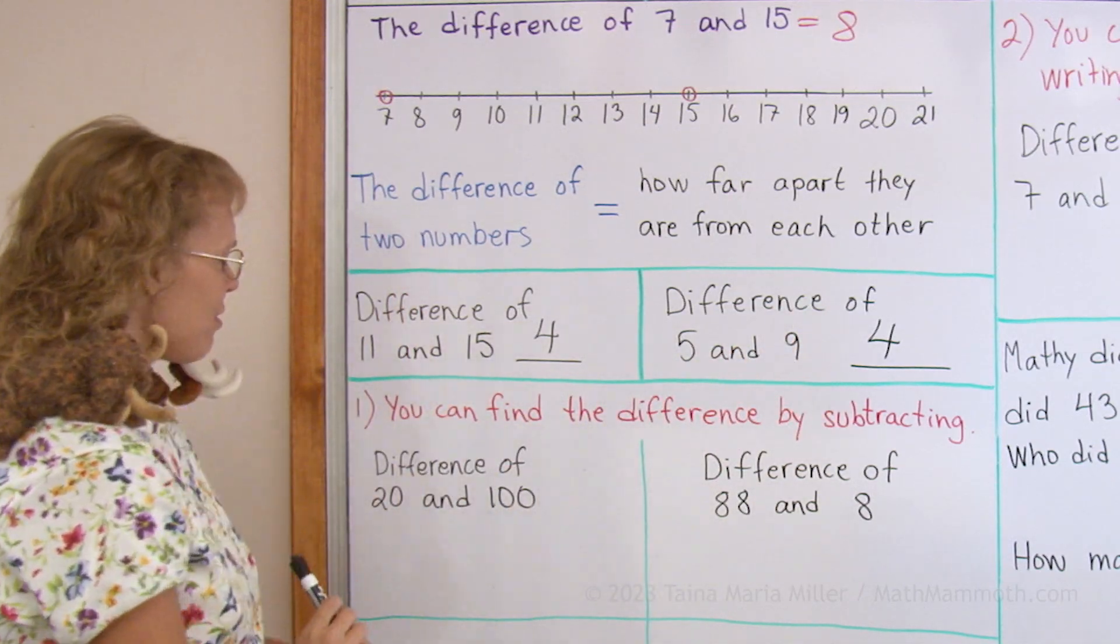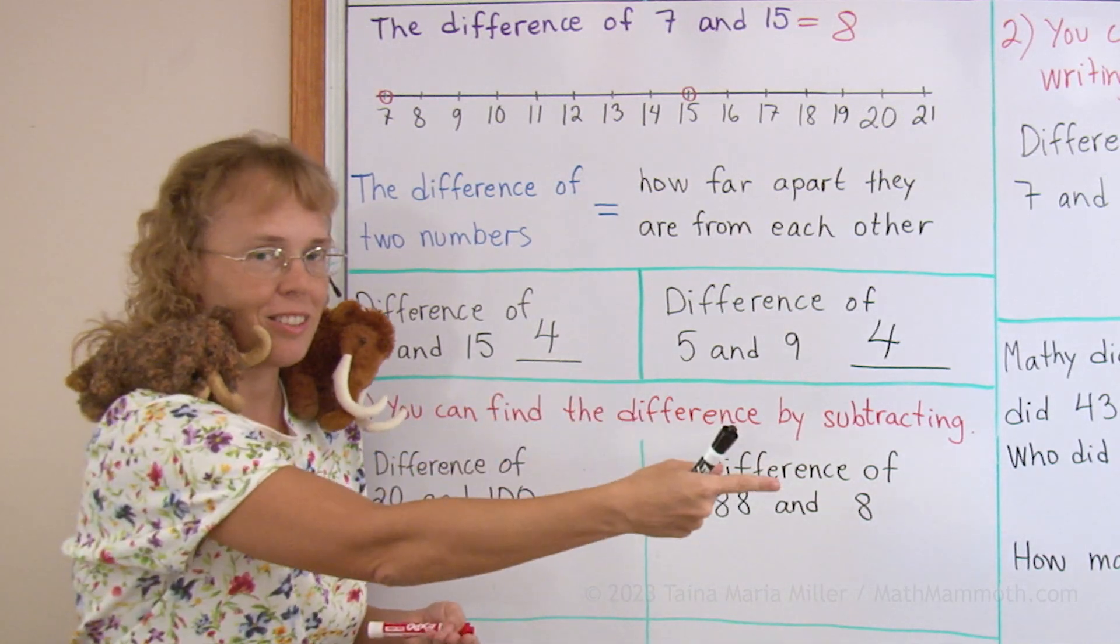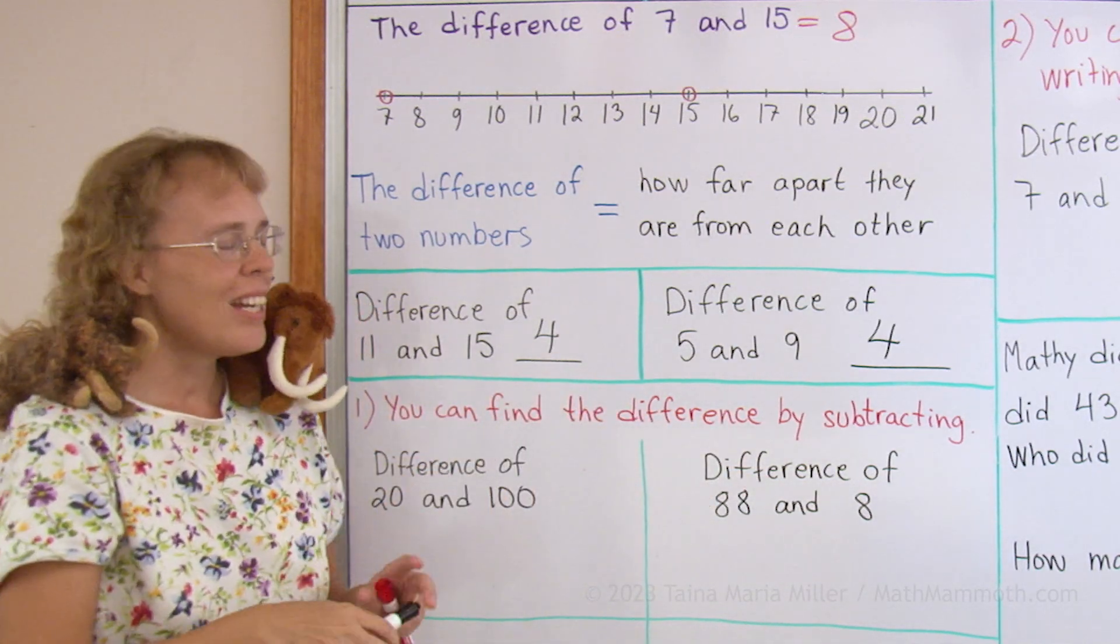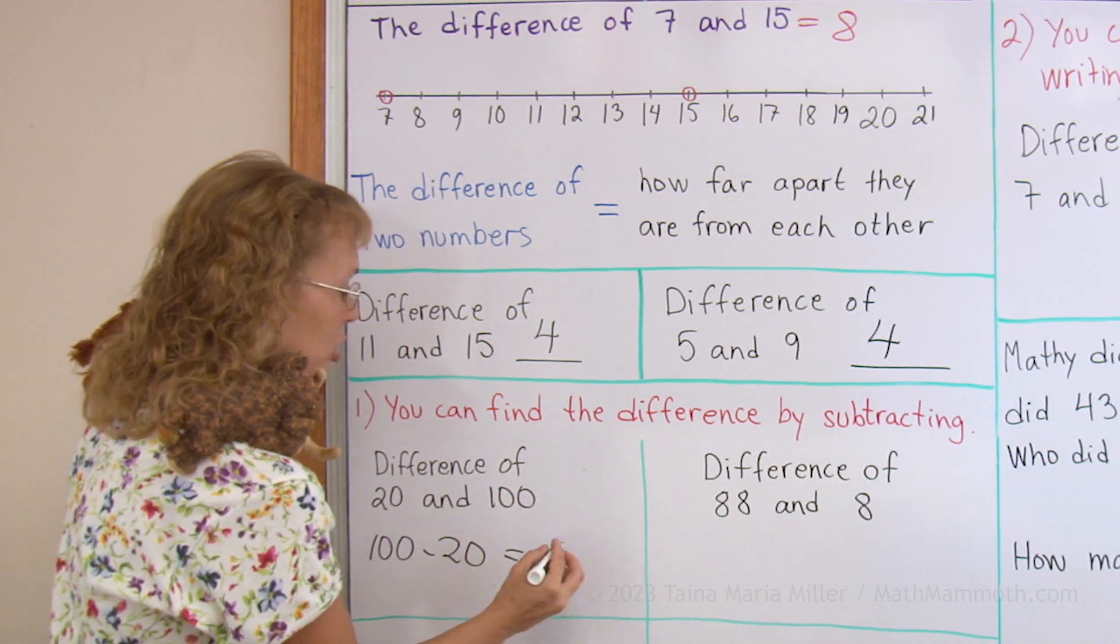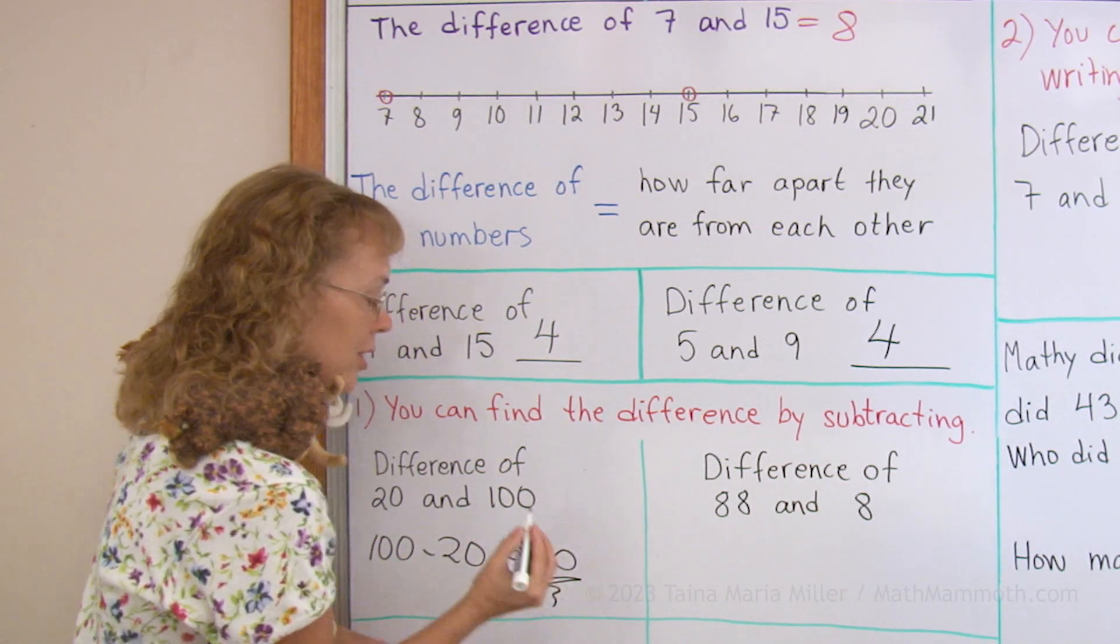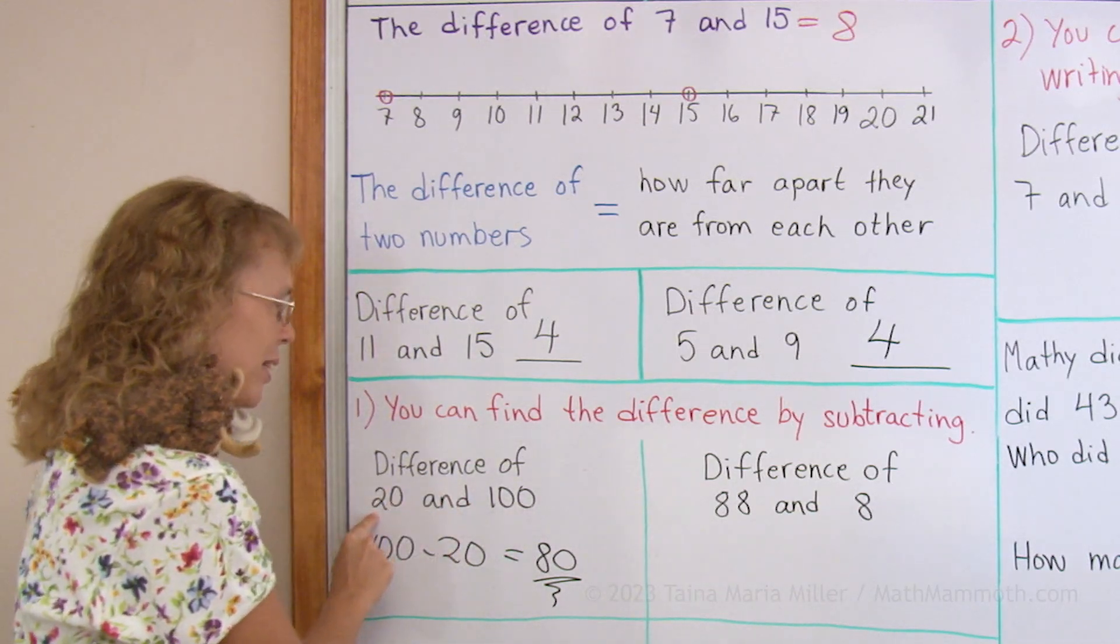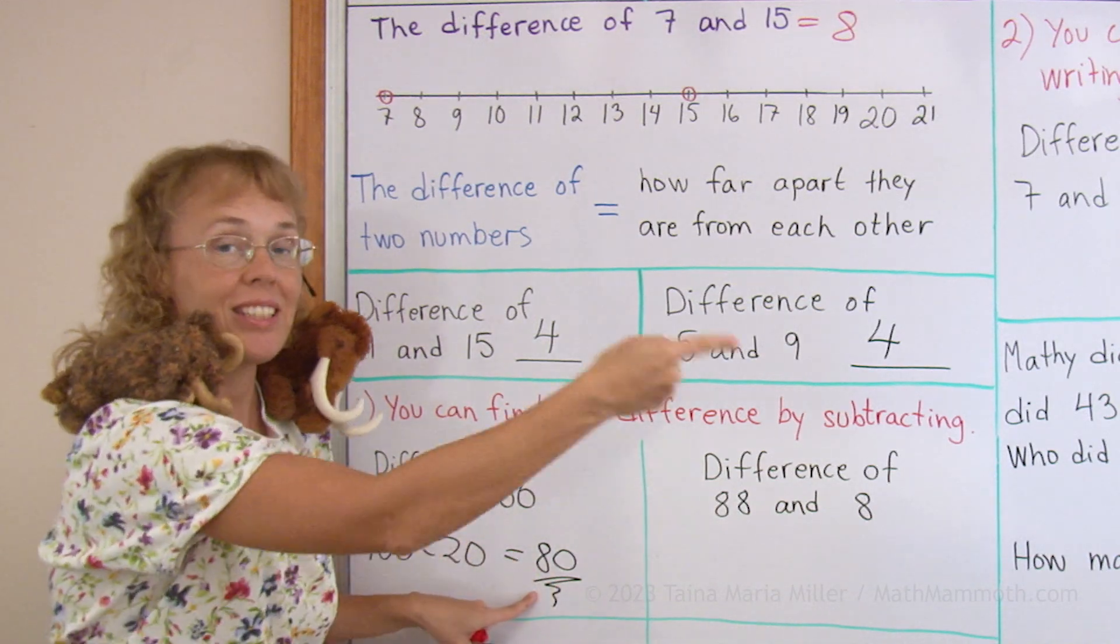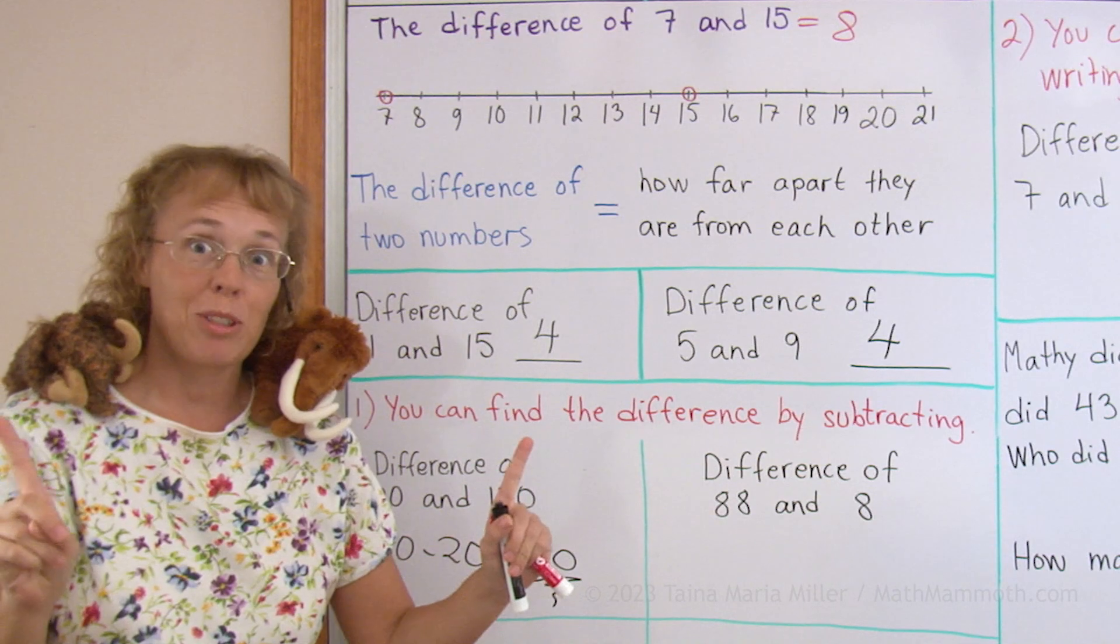So let's solve difference of 20 and 100. How many steps are there from 20 all the way to 100? That's quite many. I can subtract 100 minus 20, which is 80. So there are 80 steps. And you can think of the addition too, like I'm at 20 on the number line, I take 80 steps and then I land at 100. So they are 80 steps apart.